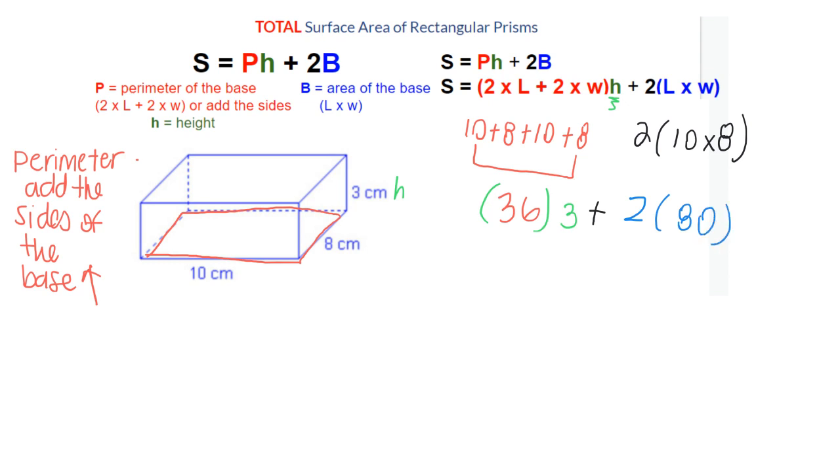Now I'm ready to start condensing and solving my formula. What we'll end up doing first is multiplying this 36 times 3. So if I type that into the calculator, I get 108. And then I'm going to figure out my other half of the formula, 2 times 80.